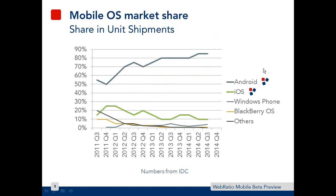This other chart from IDC shows the market share for mobile applications related to mobile operating systems. The biggest share is held by Android, between 80% and 90% of the market. The remaining shares are represented by iOS, then Windows Phone, BlackBerry, and others. This means that if you are developing mobile apps, you are very concentrated on the Android and iOS market.